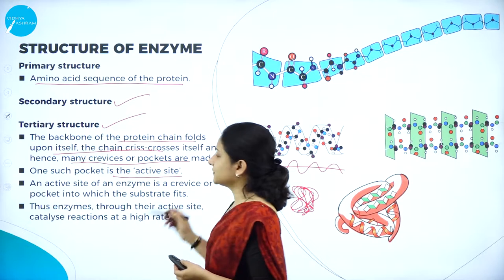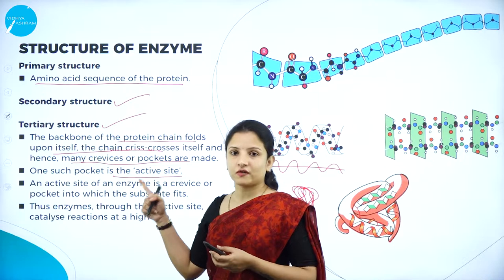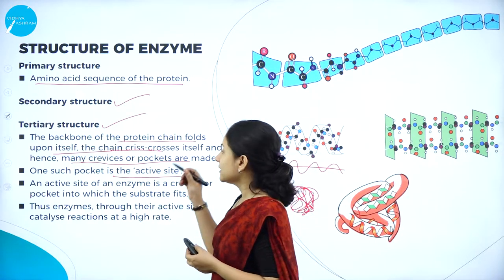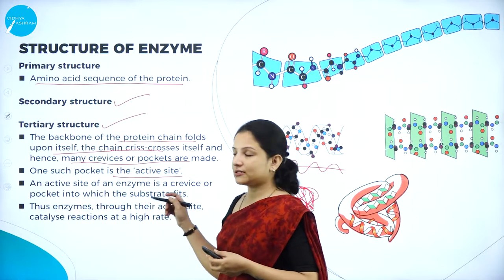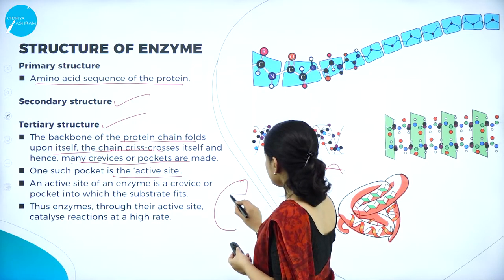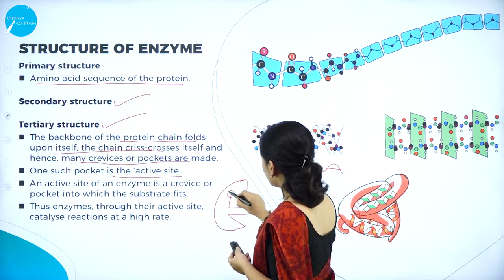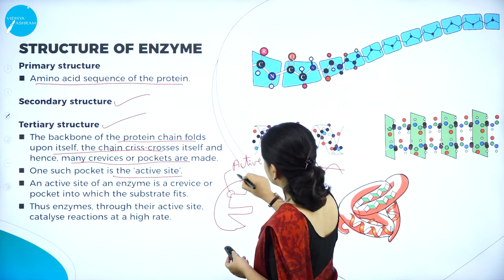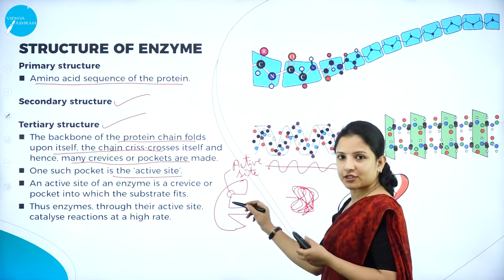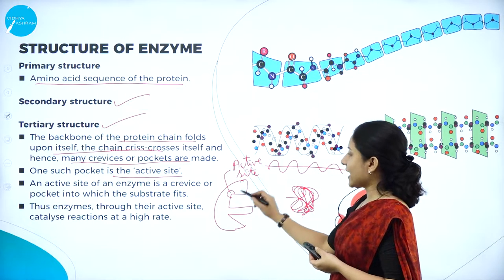One such pocket is the active site of the enzyme. The tertiary structure is an important stage because all biochemical reactions depend on it — the enzyme has an active site formed by these crevices. The active site of an enzyme is a crevice or pocket into which the substrate fits.